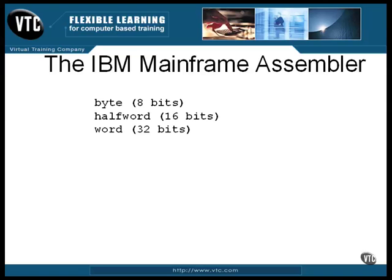A word, the natural length for the machine, is 4 bytes — 32 bits — and a double word is 64 bits. Certain types of data must be aligned on addresses of these sizes, but the assembler lines them up for you and will insert fillers only if necessary.